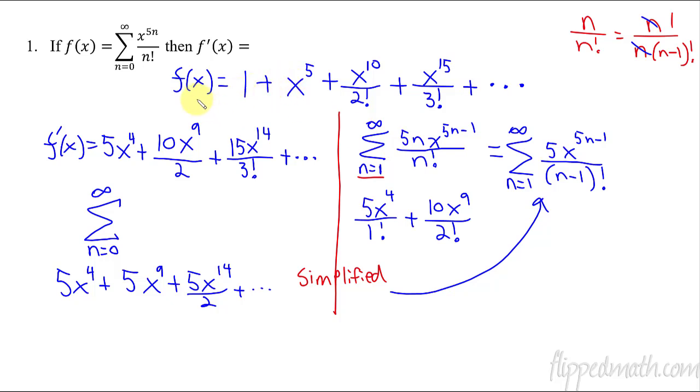Or you could take the term-by-term derivative and then simplify those from there. Either way works. Actually, you want to be able to do both. I'm just trying to show you how there is a couple ways of doing this. Okay, let's do one more problem.